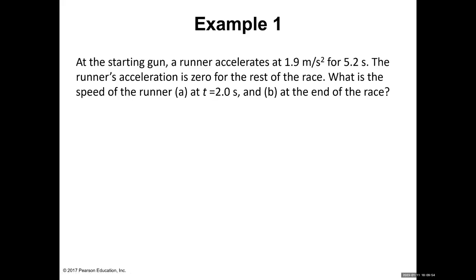All right, hopefully you guys can see the screen that says Example One. We can go ahead and read the problem together. At the starting gun, a runner accelerates at 1.9 meters per second squared for 5.2 seconds. The runner's acceleration is zero for the rest of the race. What is the speed of the runner at t equals two seconds, and also at the end of the race?